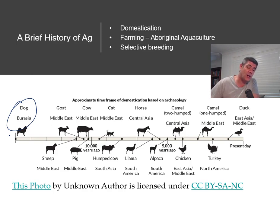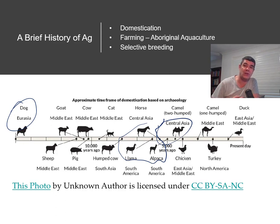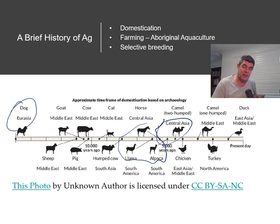Horses, llamas, alpacas, and camels have also been used for transport — animals that weren't necessarily eaten but were used to assist with moving across different places, particularly places like deserts where humans aren't quite able to cover those distances on their own. So there are lots of reasons for domestication.